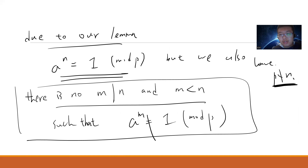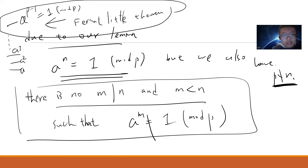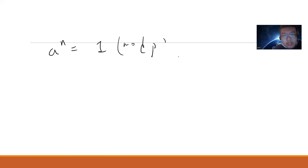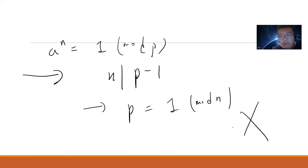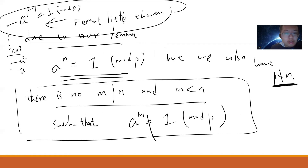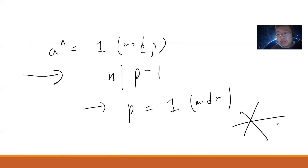By Fermat's little theorem, a^{p-1} ≡ 1 mod p. Since a has order exactly n modulo p, n must divide p - 1, which is the same as saying p ≡ 1 mod n. But p divides M while none of p_1, ..., p_N divide M, so p is a new prime congruent to 1 mod n not in our original list — contradiction. If we assume there are finitely many primes ≡ 1 mod n, we get a contradiction because we found another one.